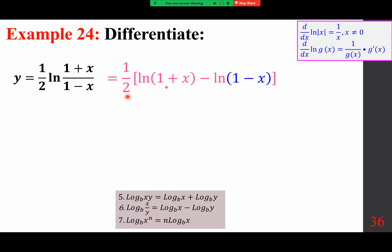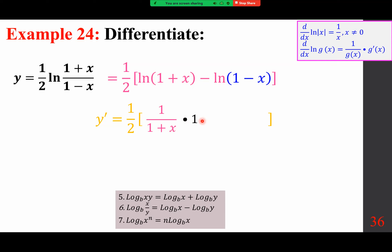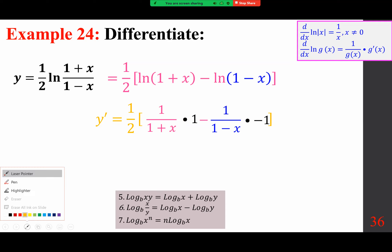Now we differentiate each piece. The one half remains outside. For the first piece, we flip it over: 1 over (1 plus x), times the derivative of the inside which is 1. For the second part, minus 1 over (1 minus x), times the derivative of the inside which is negative 1. So we have one half times [1 over (1 plus x) minus (1 over (1 minus x)) times (negative 1)]. This is the end of the calculus step.